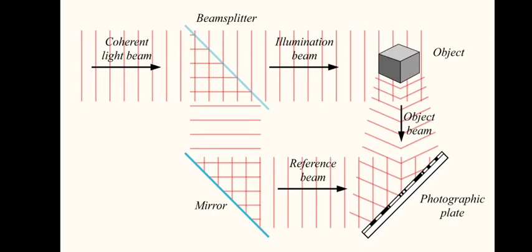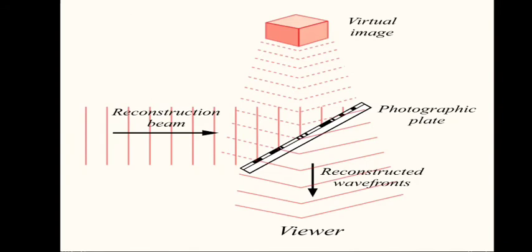This is the principle behind forming a hologram. For reconstruction, a reconstruction beam is passed through the photographic plate thus forming a real image.